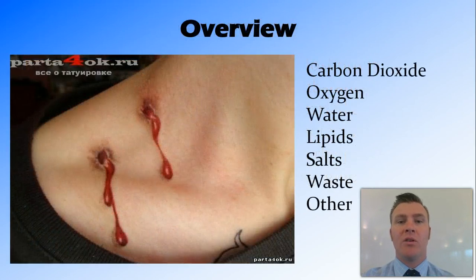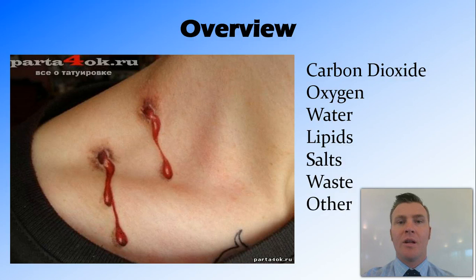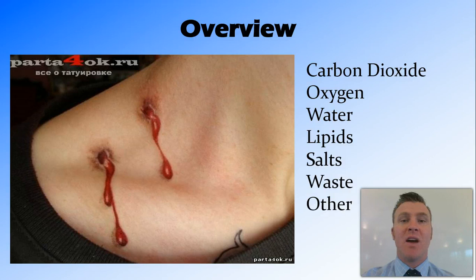In this video, we've looked at the different substances found in the blood and how they are transported around the body. We've looked at carbon dioxide, which is mainly in bicarbonate ions; oxygen, which is bound to hemoglobin as oxyhemoglobin; water, which is in the plasma; lipids, which are found in chylomicrons; salts, which are dissolved in the plasma and carried as ions; nitrogenous waste found as urea; and other things that are found dissolved in the plasma.